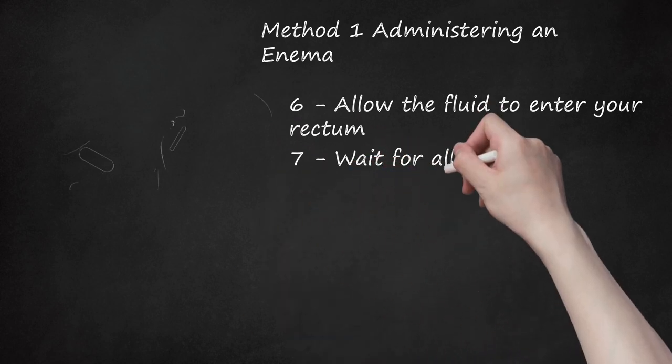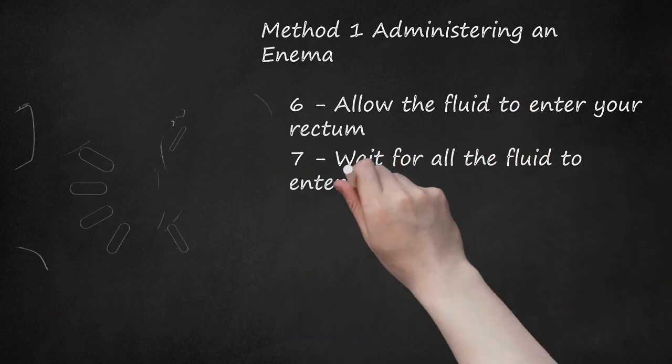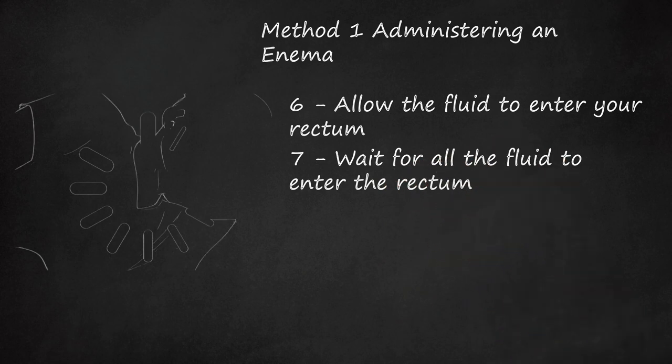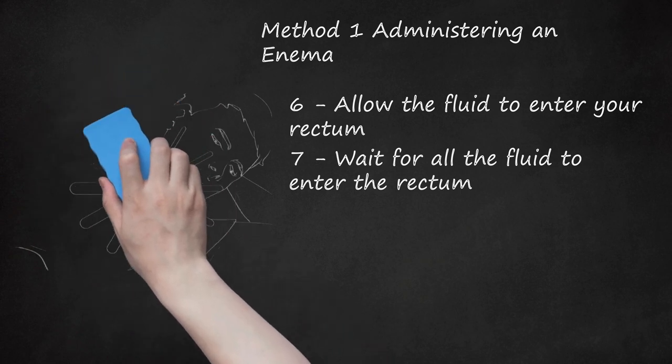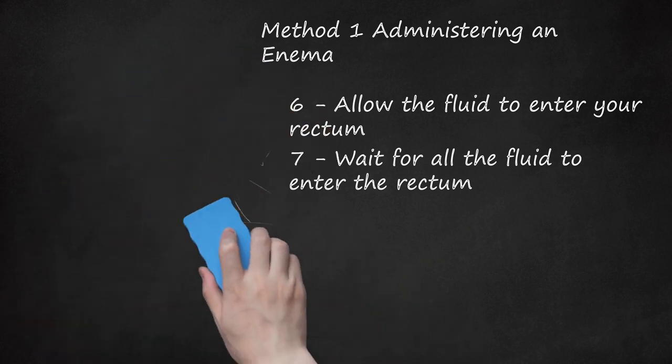Step 7: Wait for all the fluid to enter the rectum. Breathe through your mouth if you feel cramps. Close the clamp temporarily until cramping eases, then resume the flow. Watch the bag until it is empty and remove the nozzle. If using the fleet's enema bottle, keep the bottle rolled and gently remove the tube.